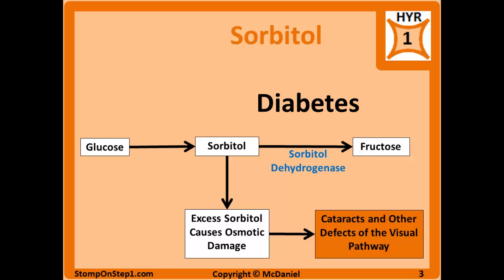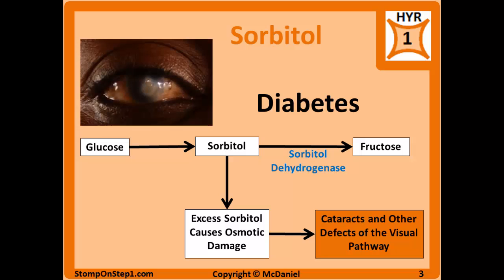However, there are certain situations where excess sorbitol can become a problem. Some tissues, mainly tissues in the eye, do not have a whole lot of sorbitol dehydrogenase. This means if there is extra sugar around — for example in a diabetic patient who is chronically hyperglycemic — you're going to have a lot of glucose, which means more sorbitol, and that sorbitol is not going to be completely metabolized. This extra sorbitol builds up and causes damage to the cells through osmosis, and the most common effect is cataracts in diabetic patients.